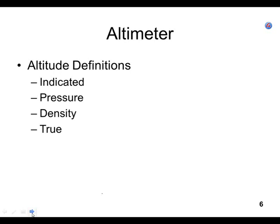True altitude is the actual accurate altitude above sea level — it requires applying a temperature correction factor in addition to the altimeter setting. With a good altimeter setting, indicated altitude is very close to true altitude unless it gets really cold. Absolute altitude is your height above the ground directly below you — your altitude above AGL.